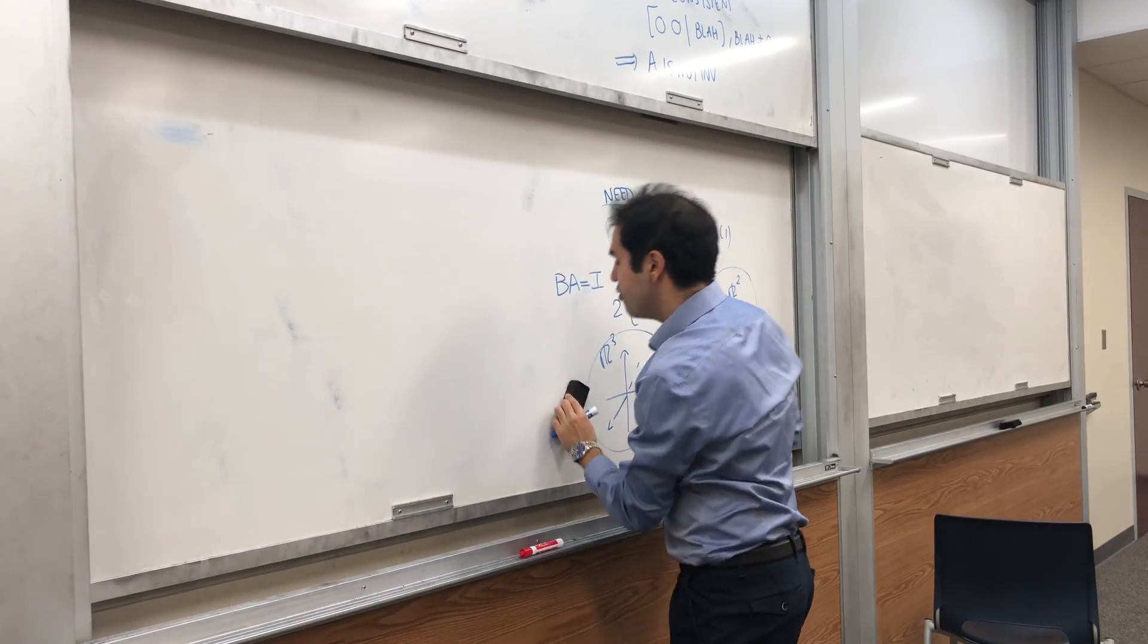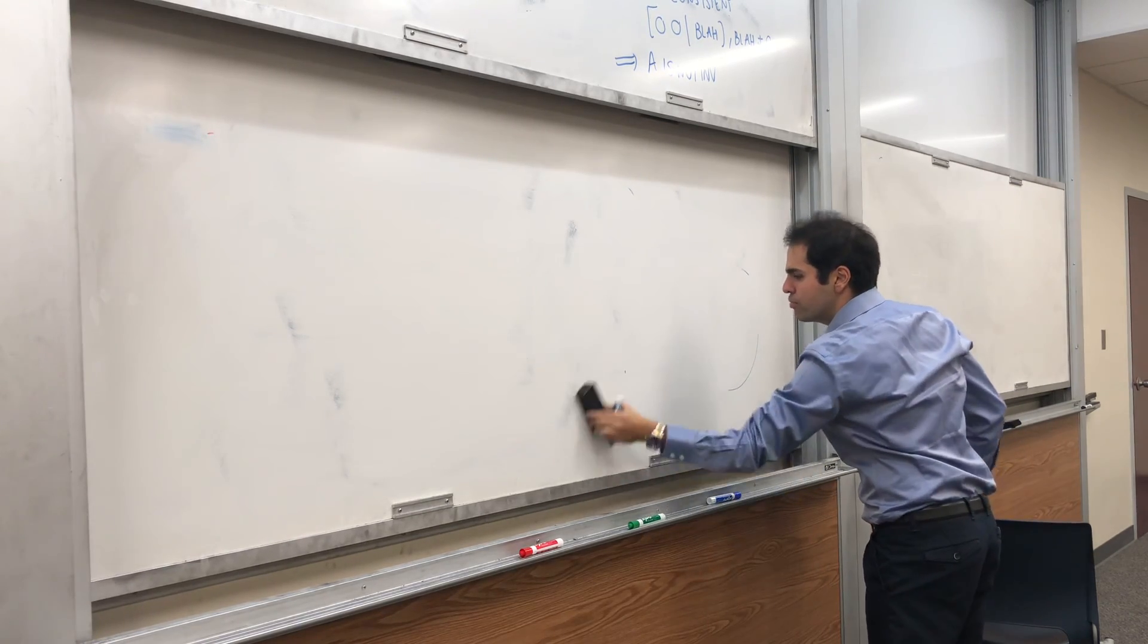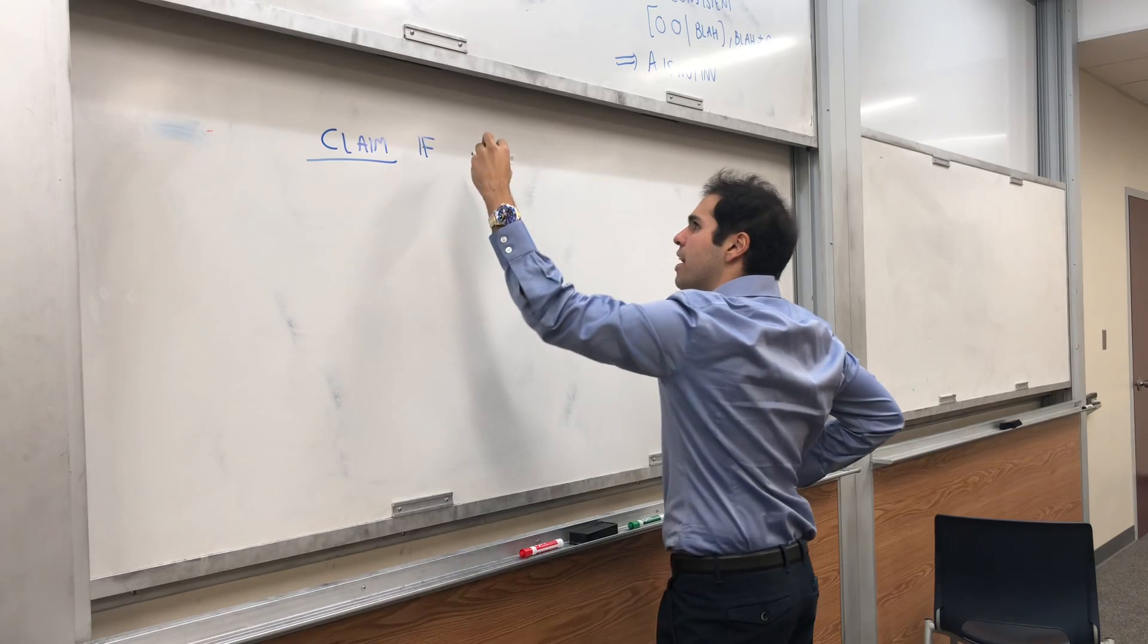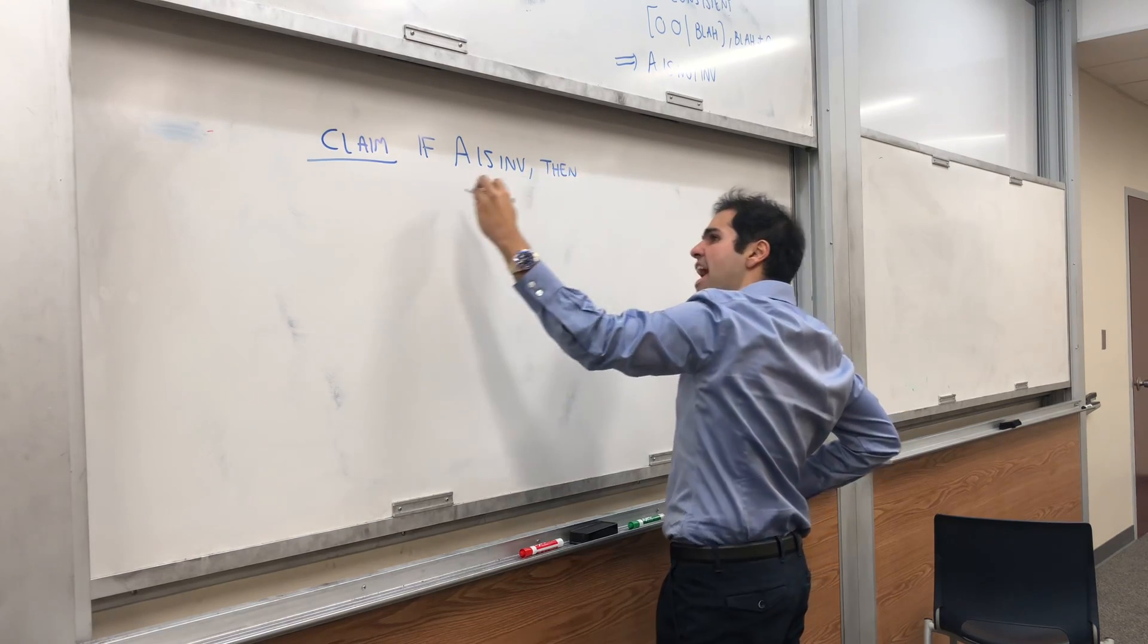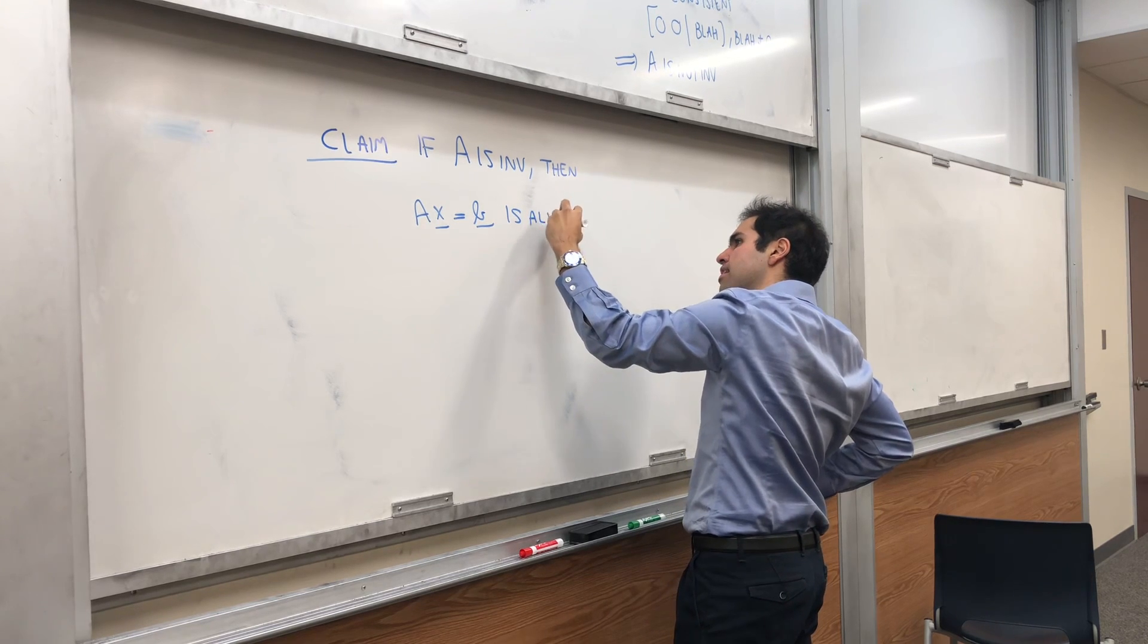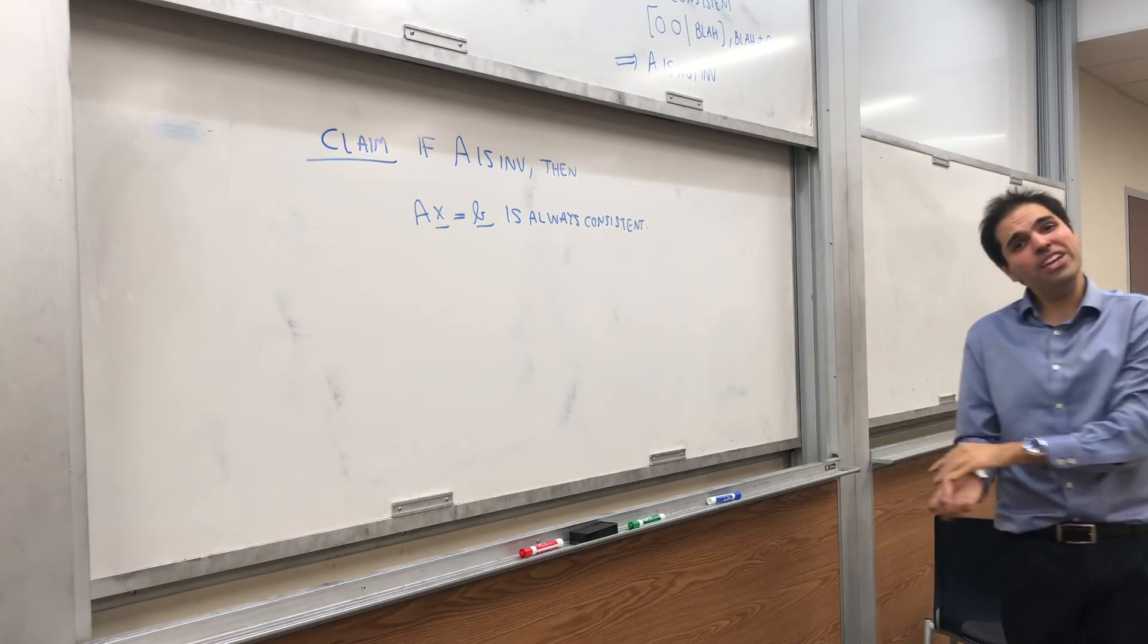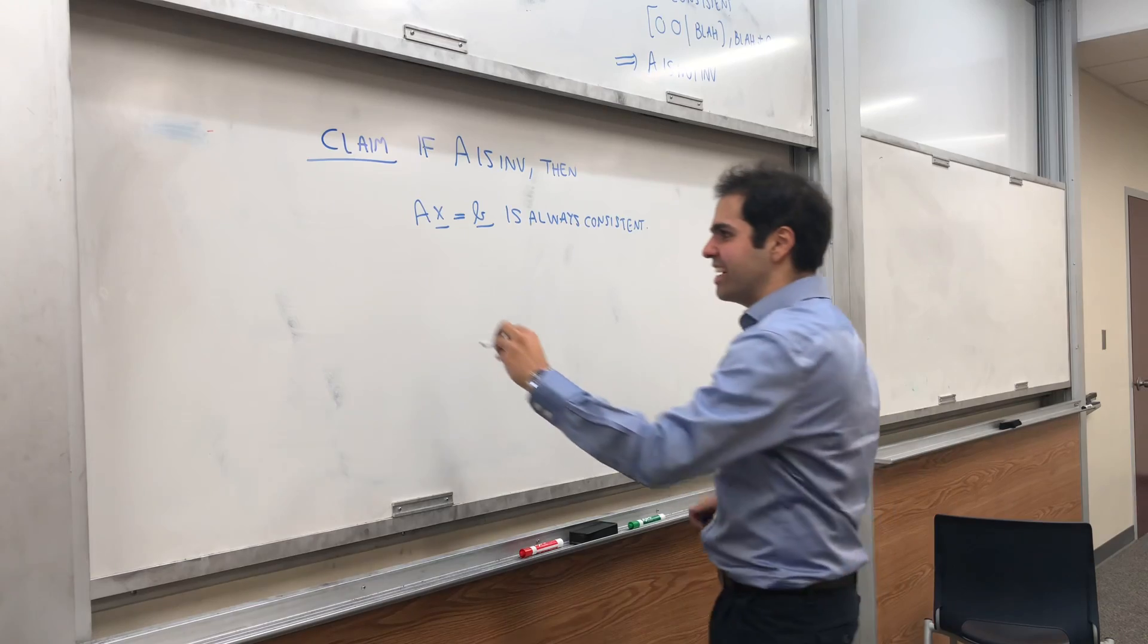And let me show you that if A is invertible, Ax equals B must be consistent. And again, by the way, the reason this worked is because we had more rows than columns. Because there are too many rows, there needs to be a row of 0, 0. Claim.